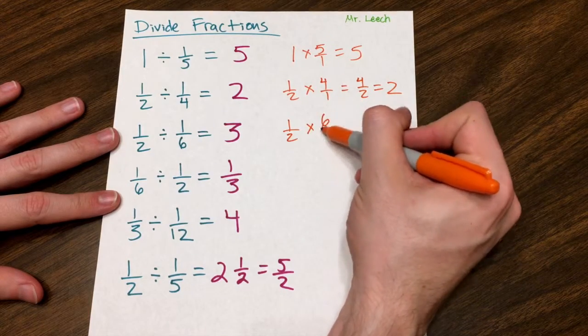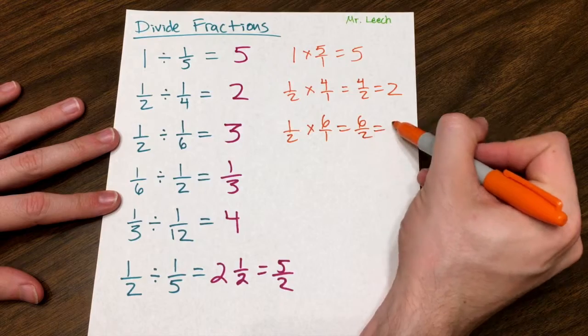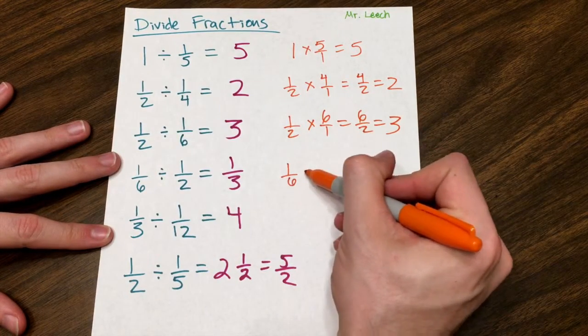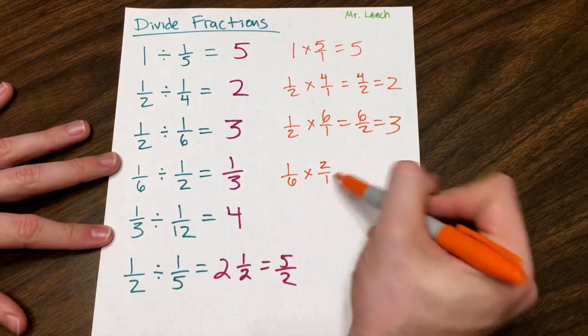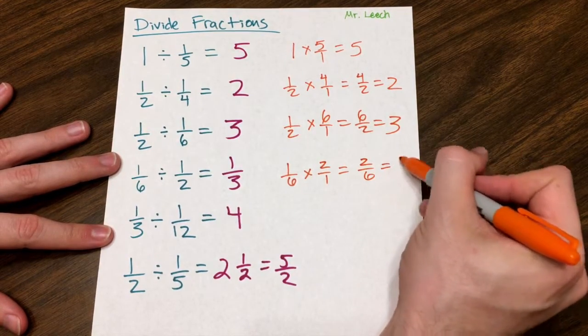One-half times six over one. Well, that's just six halves. Six divided by two is three. One-sixth times two over one. Well, that's two over six, which is one-third.